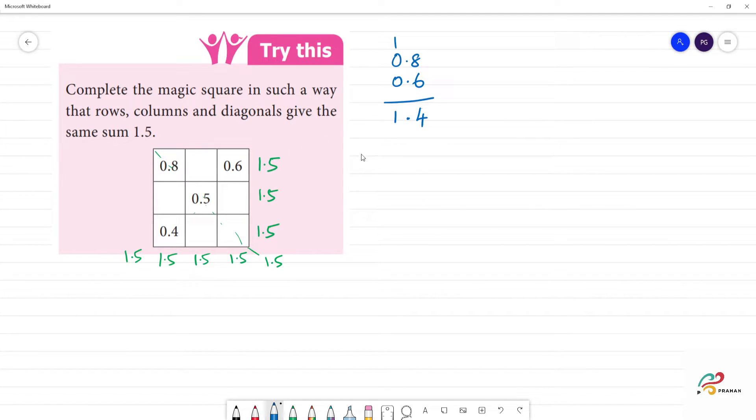So we have 1.5, we have 1.4, so we have to subtract. We have 5 minus 4 is 1, this is 0, so we have here 0.1.